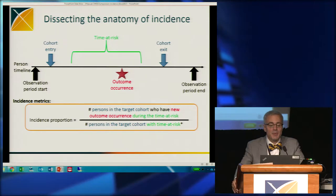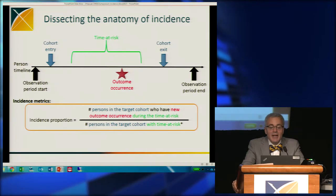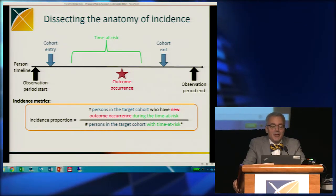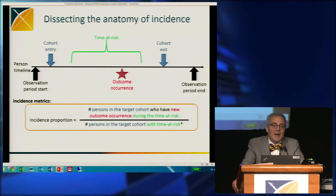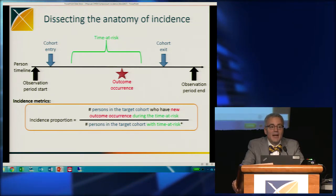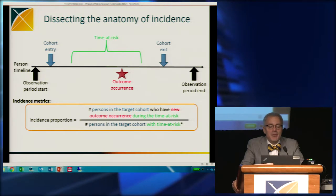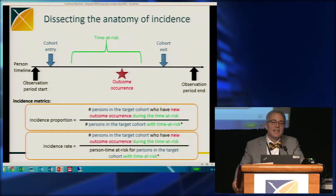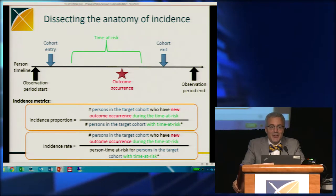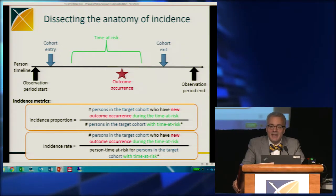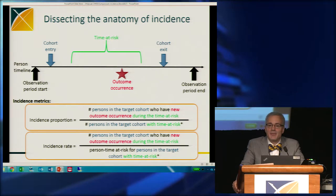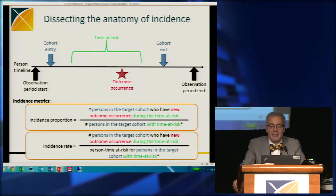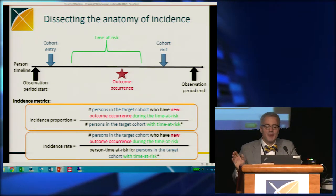I can measure the proportion. Two metrics I'm going to show: one is proportion, where the numerator is the number of persons in my cohort who experienced that outcome during the time at risk, divided by the total number of people at risk in the cohort. The other choice is an incidence rate, which is the same numerator — how many experienced the outcome — divided by the number of person-years or person-days that the person is at risk. So I can do a rate or a proportion.